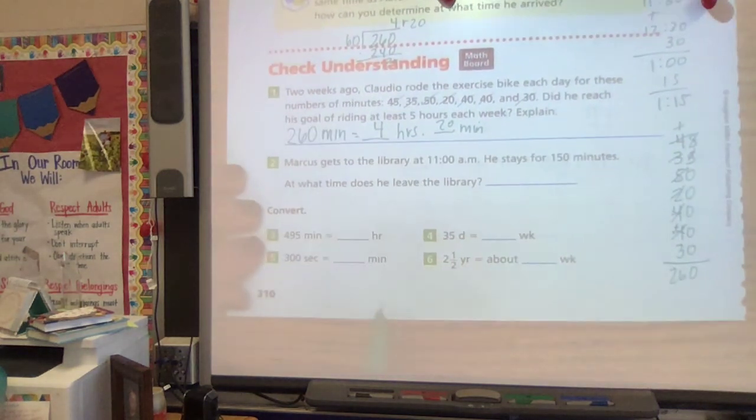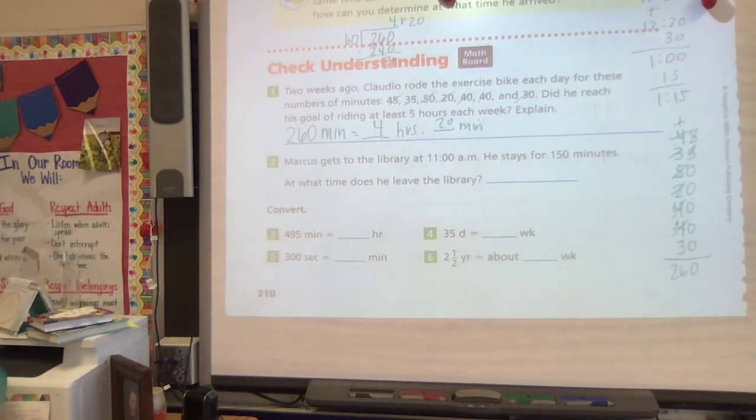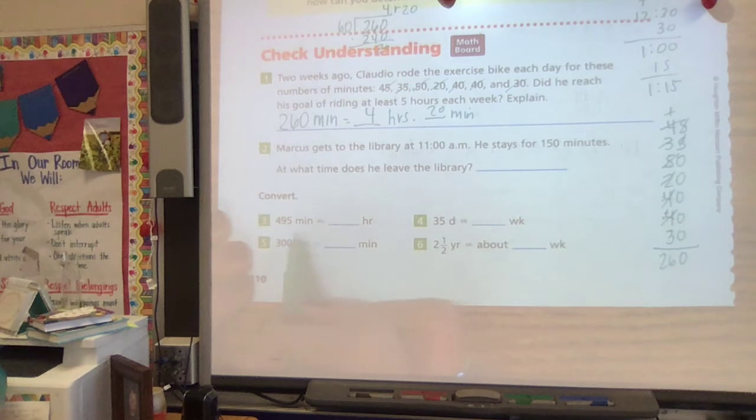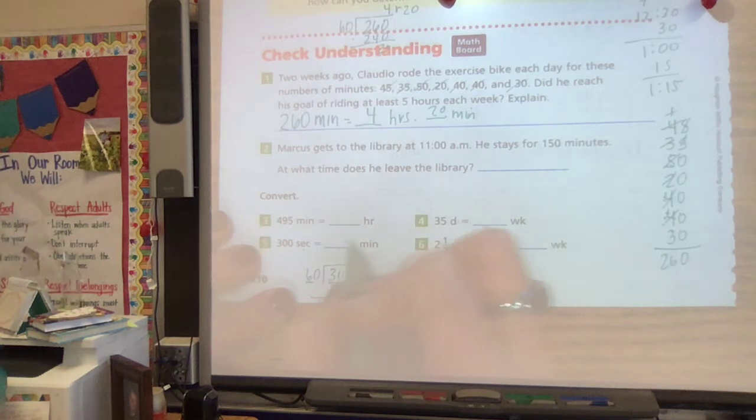Let's look down here to the convert ones so we can change some different things. We've done minutes and hours. Let's do seconds and minutes. So what do we know about seconds and minutes? We know there are 60 seconds in a minute. So if we're going from smaller to bigger, we've got to divide by that 60. How many times can six go into 30? I know that's five. So five times 60 gives me exactly 300. So 300 seconds is five minutes.